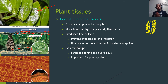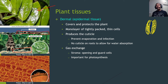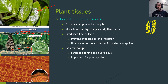These stomata are constantly opening and closing depending on environmental conditions. They're very important for gas exchange — we need CO2 for photosynthesis to make sugars, and we also need oxygen to undergo cellular respiration.